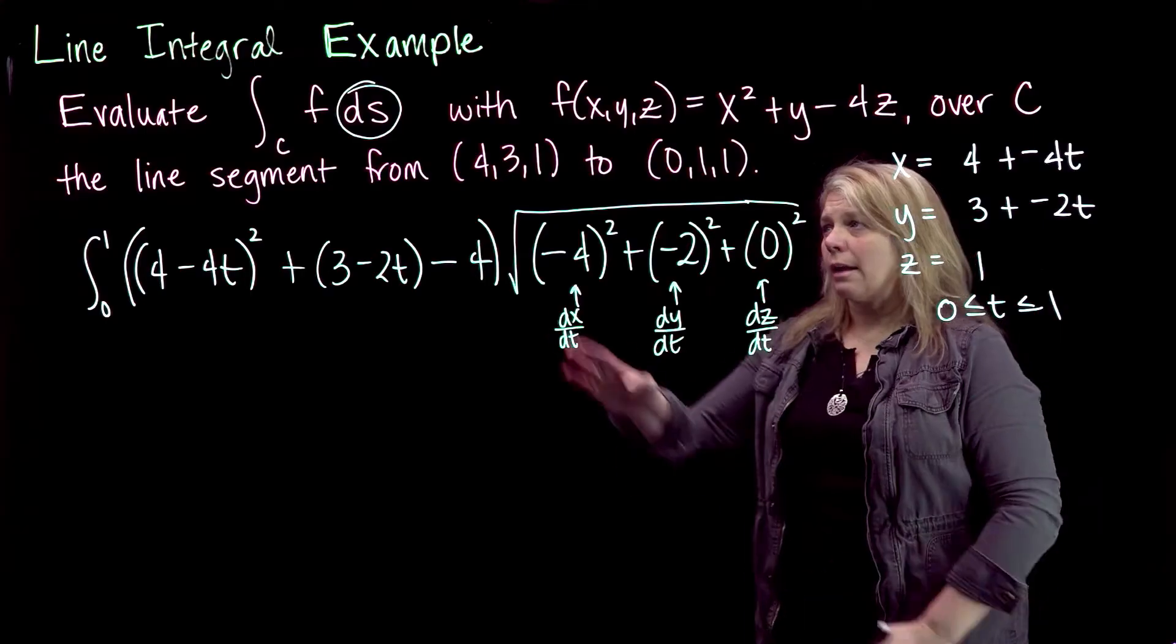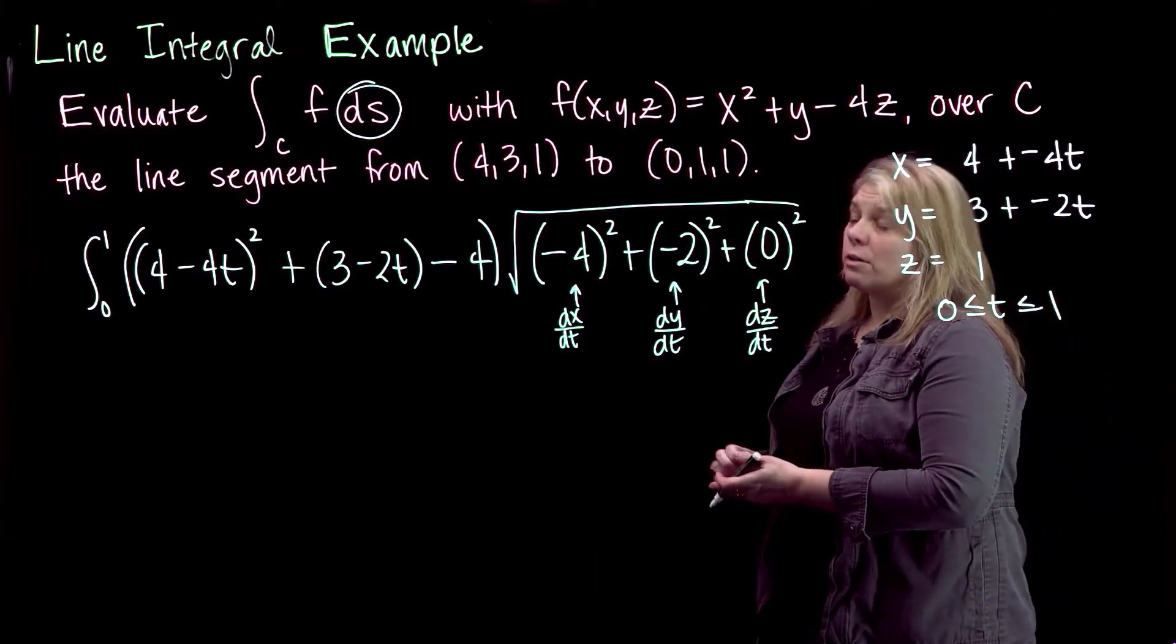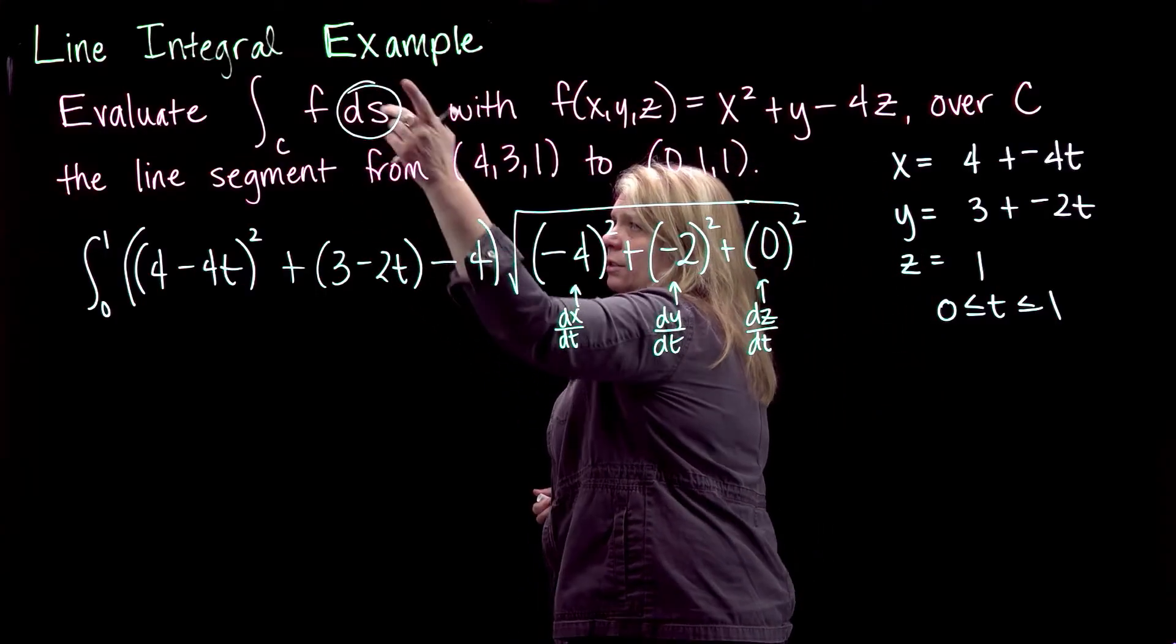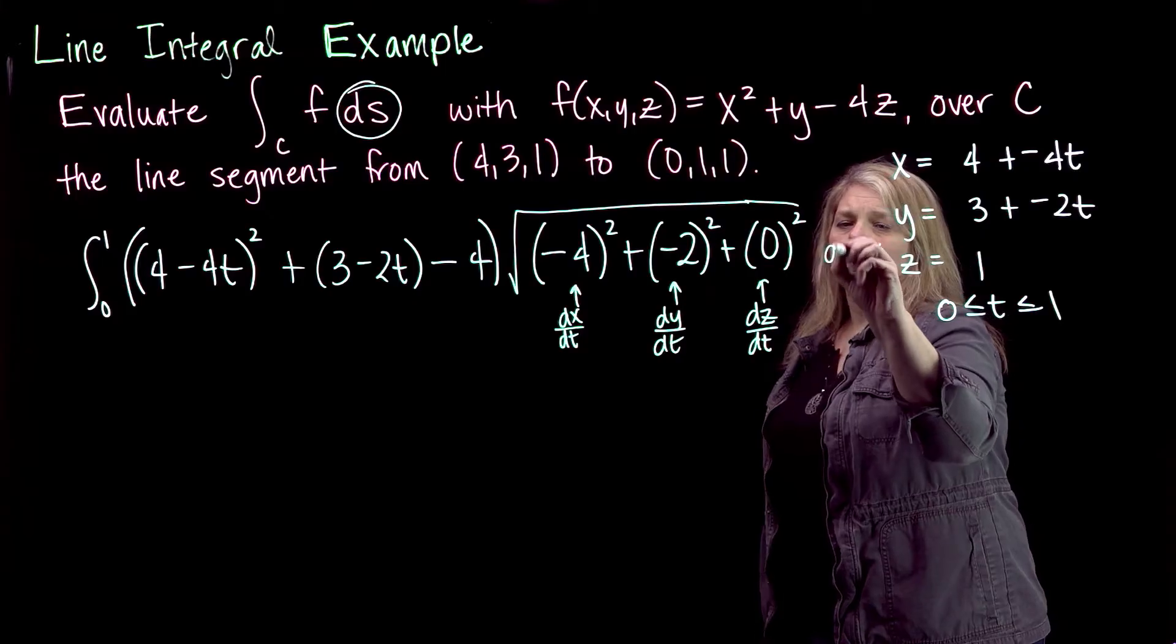So that's that arc length that we did way back in chapter 13, coming back again here. Also in the theorems in this chapter, it talks to you about how the ds differential can be rewritten in this form, dt.